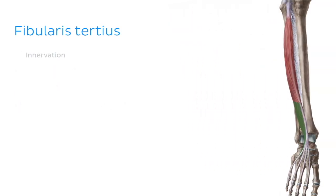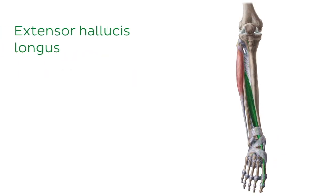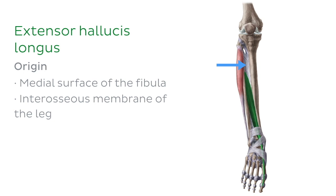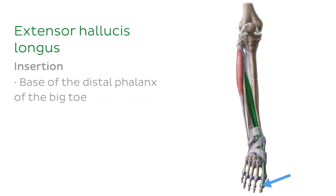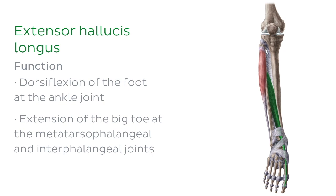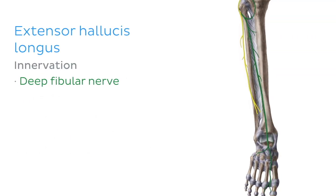The fibularis tertius is also innervated by the deep fibular nerve. The last muscle of the anterior compartment of the leg is the extensor hallucis longus. This muscle originates from the medial surface of the fibula and the interosseous membrane of the leg, and inserts at the base of the distal phalanx of the big toe. It is responsible for dorsiflexion of the foot at the ankle joint and extension of the big toe at the metatarsophalangeal and interphalangeal joints. As we can see, extension of the big toe pulls it towards the leg, decreasing the angle between the big toe and the leg. This muscle is also innervated by the deep fibular nerve.